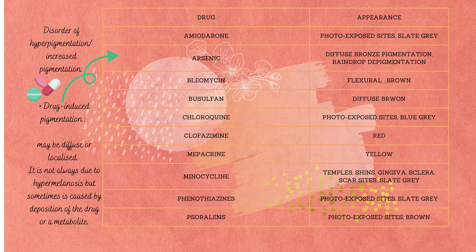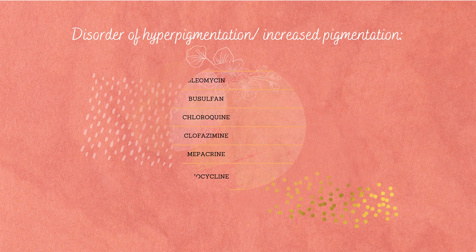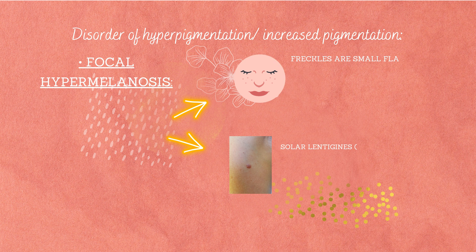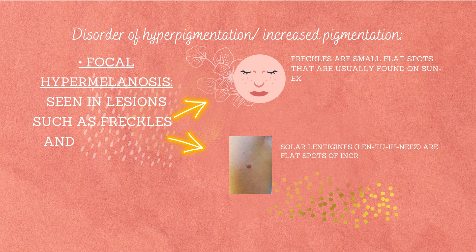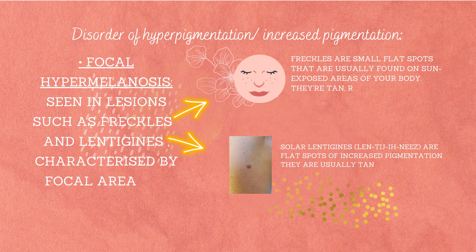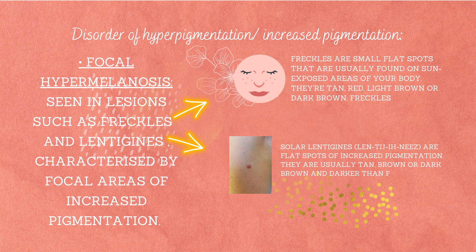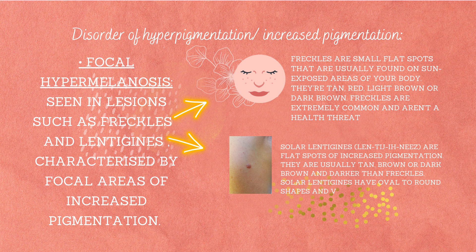Focal hypermelanosis is seen in conditions such as freckles and lentigines, characterized by local areas of increased pigmentation. Freckles are small flat spots usually found on sun-exposed areas of the body. They are tan, red, light brown, or dark brown. Freckles are extremely common and are harmless; they are often more visible in summer and are more likely in people with light skin and blonde or red hair.